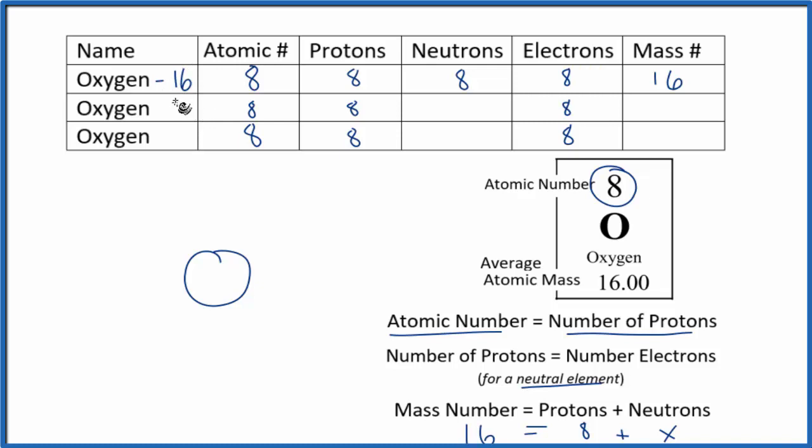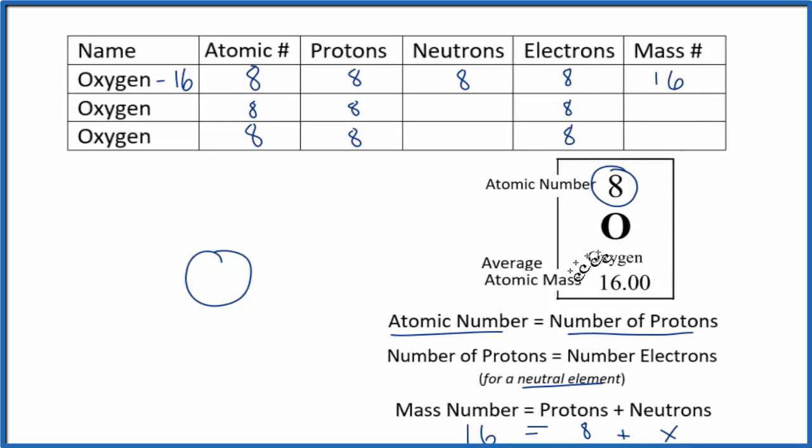Most of the oxygen that you would find if you took a sample of oxygen would be the mass number 16, and we know that because we have 16 for the average, that's going to mean that 16 is the most predominant form of isotope here for oxygen.